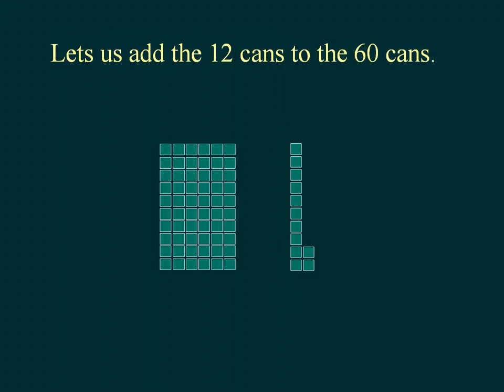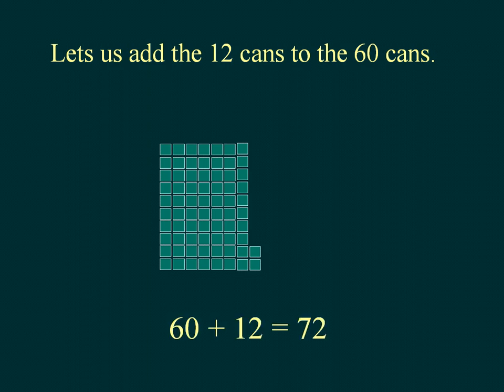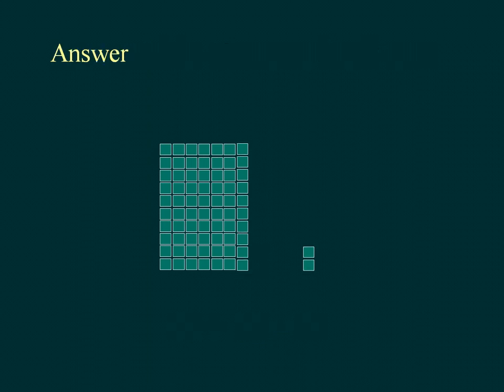Let us add the 12 cans to the 60 cans. 60 plus 12 is equal to 72. 3 cases of sodas have 72 cans. 70 plus 2 is equal to 72.